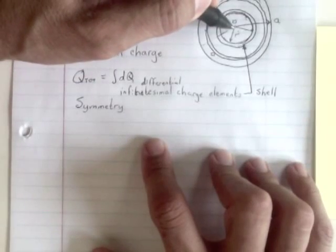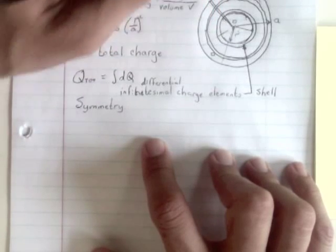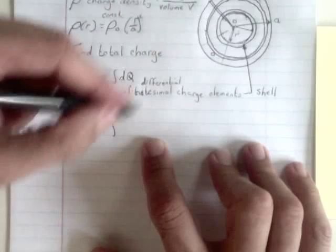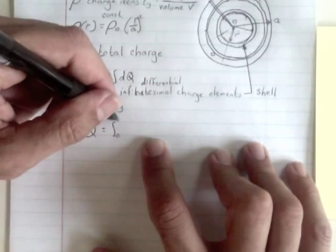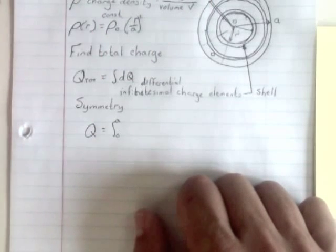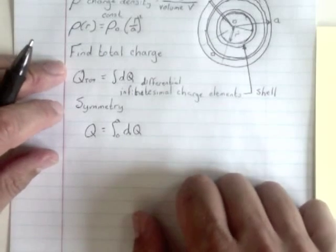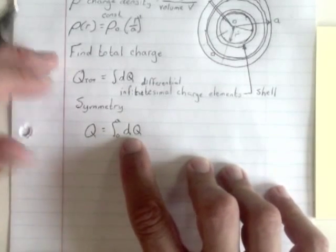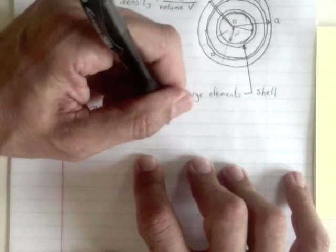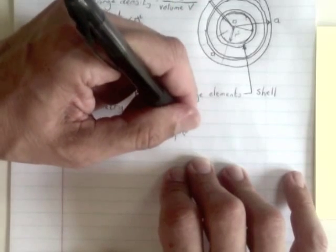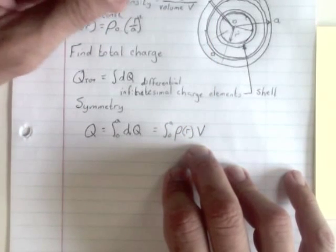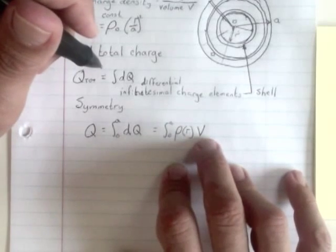So my integration variable, I'm going to be going from here out to there. I'm going to be changing R, integrating over R. So Q total is going to be the integral from zero to A, all my charge elements. But this charge element, the charge on that is going to be rho of that R times the volume. Charge density is charge over volume, so charge is going to be charge density times volume.